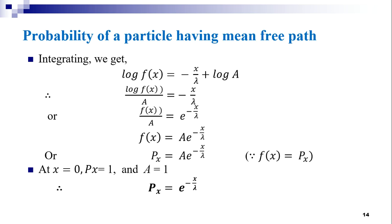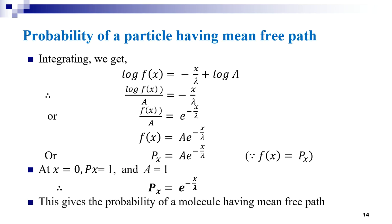This gives the probability of a molecule having mean free path. Px equals e to the power minus x by lambda. Thank you.